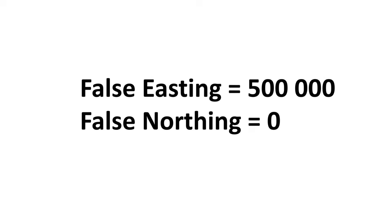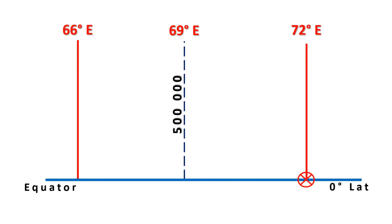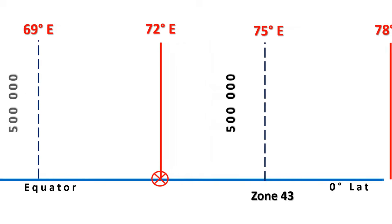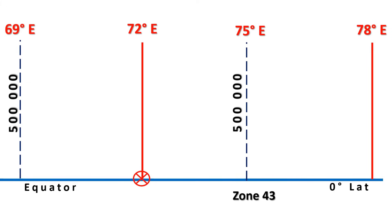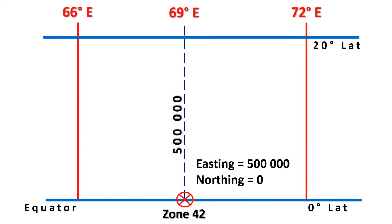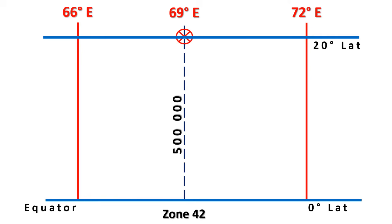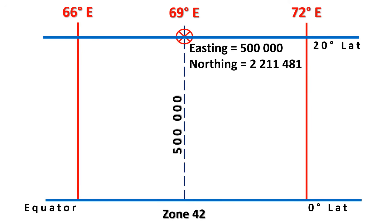When you start from the Central Meridian along the equator towards East, your 500,000 Easting will keep increasing until you reach the border of the next zone, where it will be 833,967 Easting. As you cross the zone, your Easting will be 166,032, which is the starting Easting for the next zone. If you move along the Central Meridian towards the north and reach 20 degrees North latitude, your Easting at the Central Meridian will remain unchanged, but your Northing will increase from zero at the equator to 2,211,481 at 20 degrees North latitude.